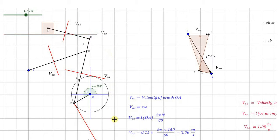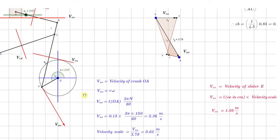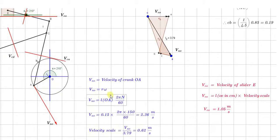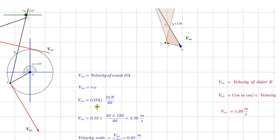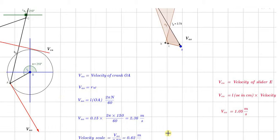These are the various velocity vectors. Out of all these vectors, the velocity of A with respect to O is known in magnitude as well as in direction, whereas we have to find out the velocity of this particular slider. First, we will find out the velocity of crank OA. As per the given dimensions, the length of the crank is 0.15 meter and N, the rotational speed, is 150 RPM. So we will get the velocity of A with respect to O as 2.36 meter per second.